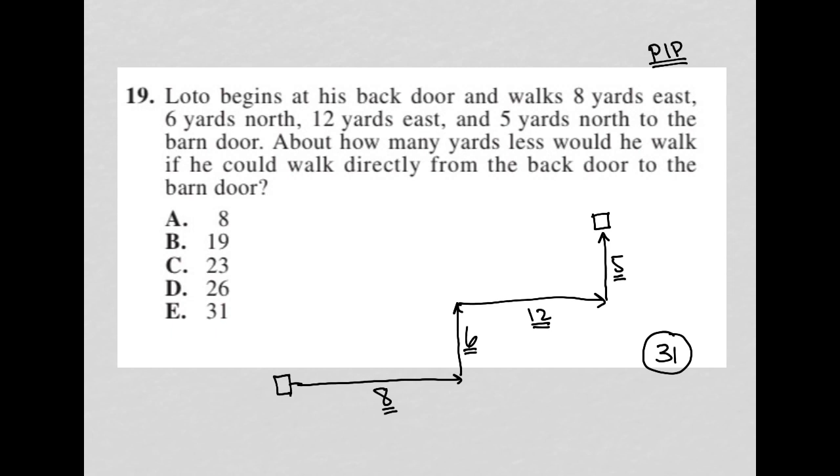But we want to figure out how many fewer yards would he walk if he just went this way, directly from door to door. Now, here's the benefit of having a drawing. When we draw this out, we can see that these are both right triangles.